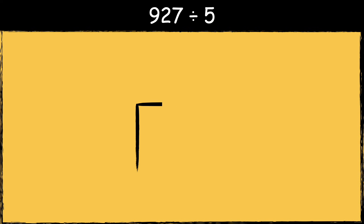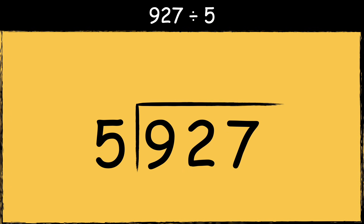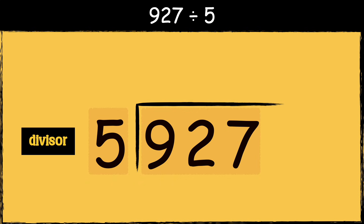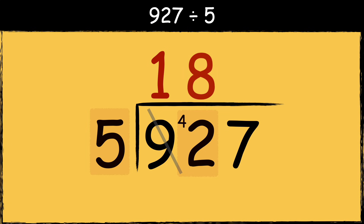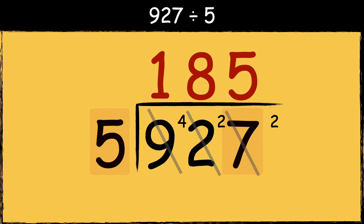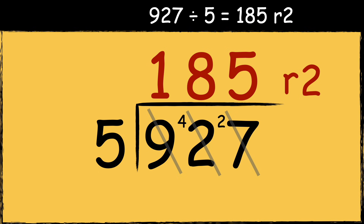Here's the next example: 927 divided by five. So we need to find out how many times the divisor fits into these numbers. Five goes into nine once with four left over. Five goes into 42 eight times with two left over. Five goes into 27 five times with two left over. As there are no more numbers left to divide, this left over two is the remainder. So the answer is 185 remainder two.